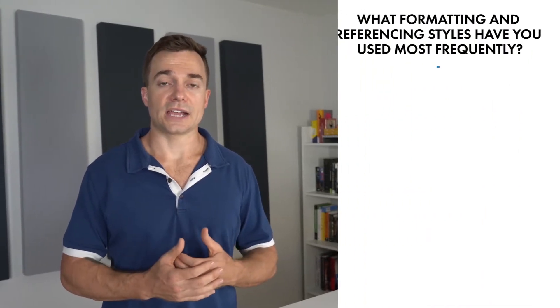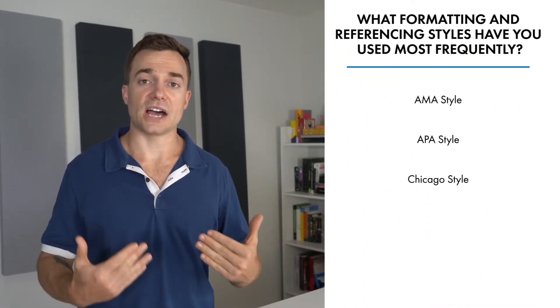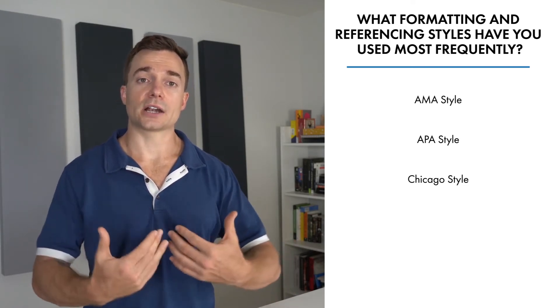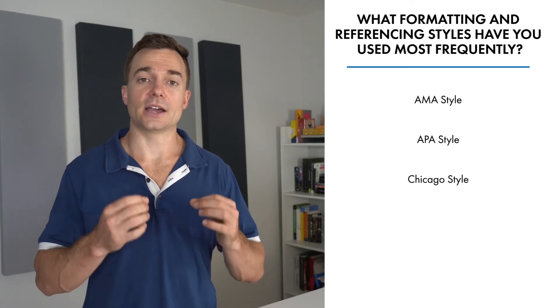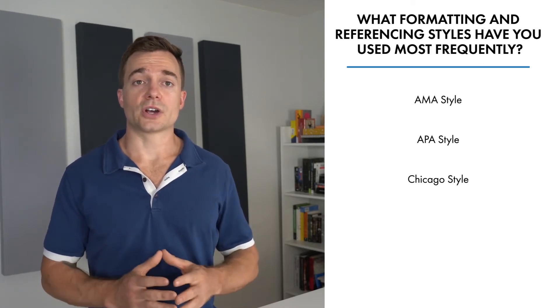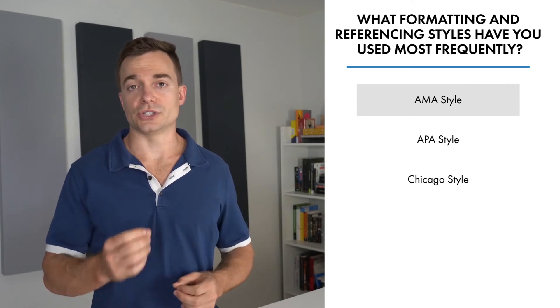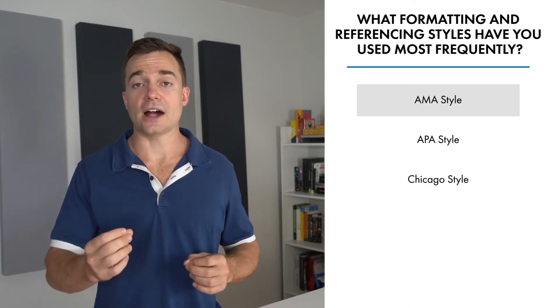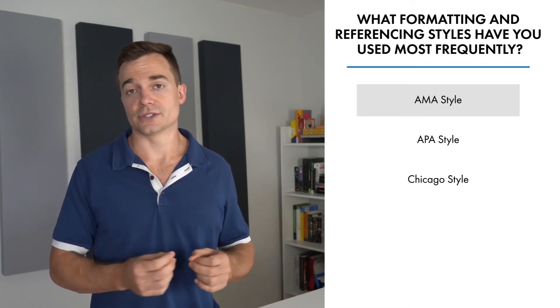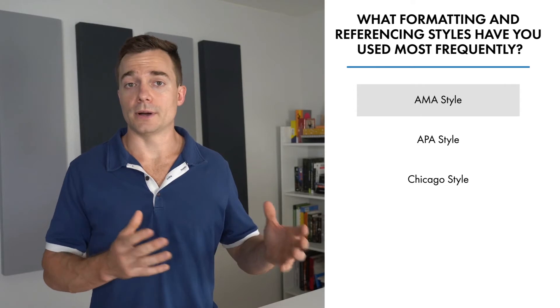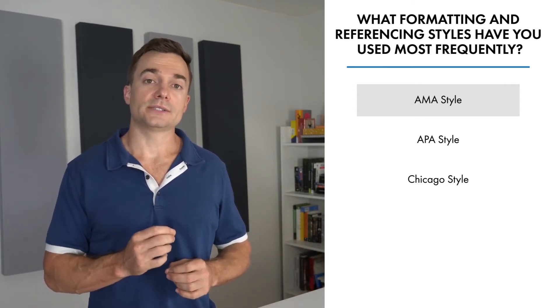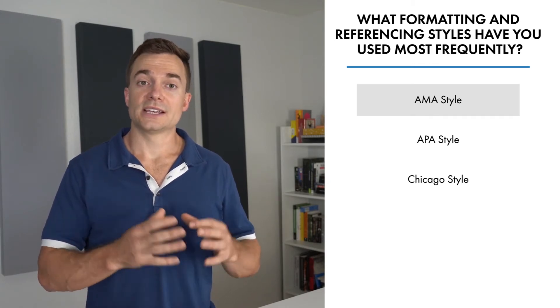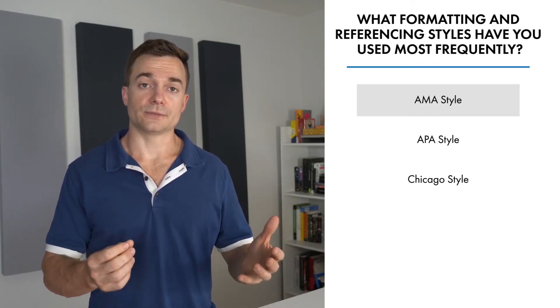Another question that can pop up is what formatting and referencing styles have you used most frequently? A style guide or manual of style is a set standard for writing, formatting, and designing of documents. Some of the relevant style guides for medical writers are the AMA style, which refers to the American Medical Association style, the styling of journal manuscripts as described in the AMA Manual of Style, a guide for authors and editors. Many biomedical journals and other medical publications, especially those in the U.S., ask authors to use the AMA style to prepare their manuscripts for scientific writing style, grammar, punctuation, and references.